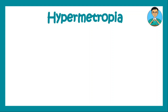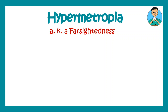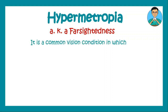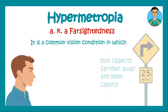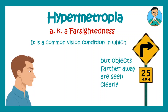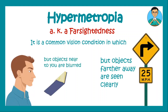In this video, let us learn about hypermetropia, which is also known as farsightedness or hyperopia. This is a common vision problem in which objects that are far away appear clear, whereas objects which are near appear blurred.